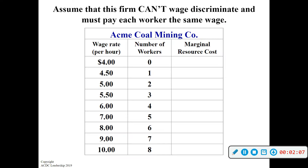Assume the firm can't wage discriminate and will pay all workers the same wage. But in order to attract new labor, they're going to have to raise the wage they pay — kind of like product markets had to lower the price to attract new customers. So if they pay $4, no one wants to work. At $4.50, one person wants to work.